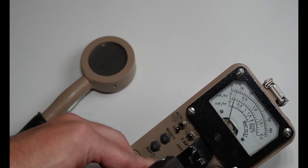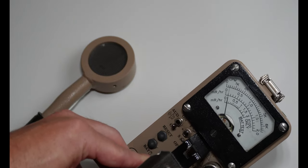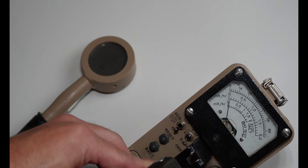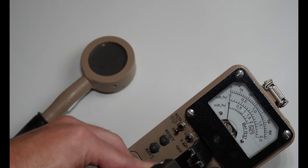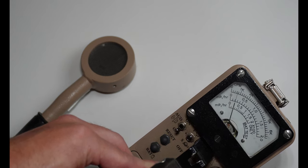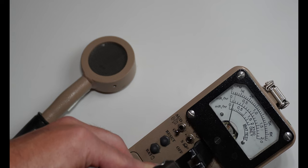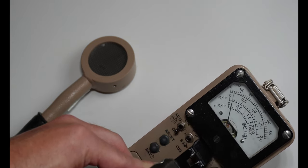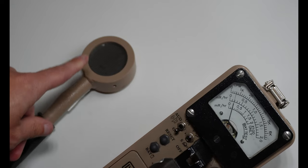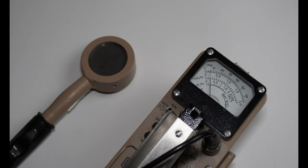Counts per minute is going to be used mostly for analyzing wipe tests, or looking for any kind of removable contamination. And oftentimes you're going to need to convert from counts per minute to disintegrations per minute using a known efficiency for your detector. That known efficiency may come from the manufacturer, or it could also be measured using known radioactive sources by your physicist.